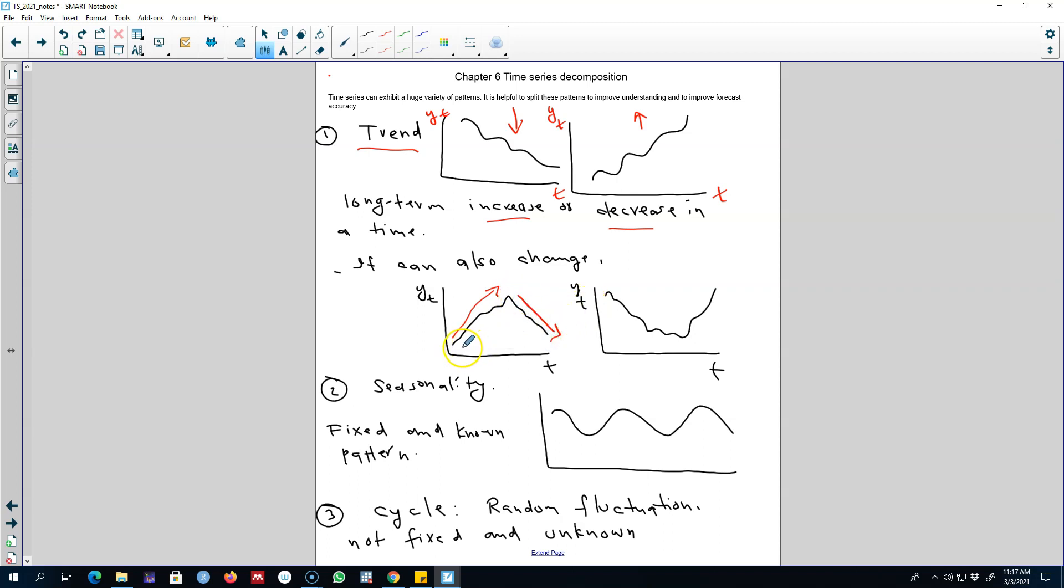So a series can also show us a trend which can change from upward to downward or from downward to upward as in this case. So this is the first pattern that you may observe in a time series.